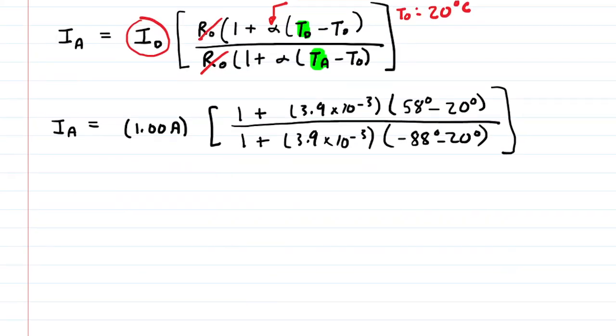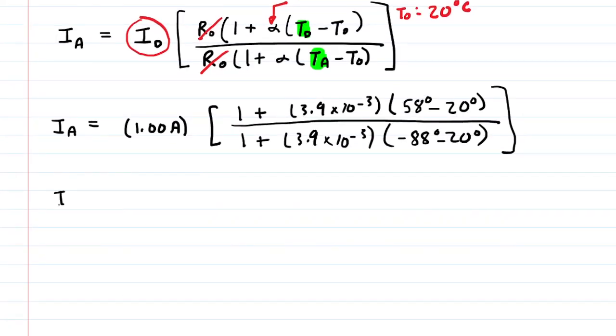And when you plug that all into a calculator, you should end up with a current in Antarctica of approximately 1.98 amps.